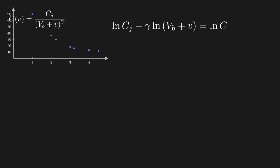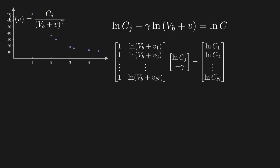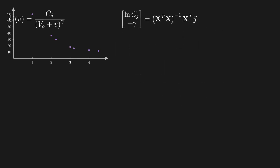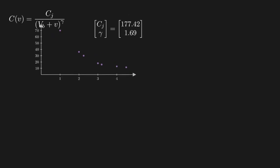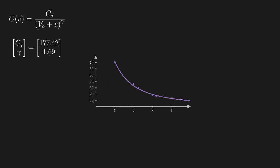So now we can rewrite this in matrix form, and we know how to solve for our unknowns using the left pseudo-inverse. In this case, the solved coefficient vector gives the natural log of cj to be 5.18, and negative gamma to be negative 1.69. Therefore, cj is 177.42, and gamma is 1.69. And here is the resulting fit plotted alongside the data.